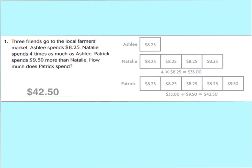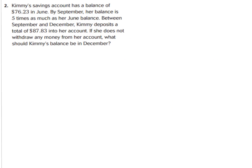Let's look at question two. It says Kimmy's savings account has a balance of $76.23 in June. By September, her balance is five times as much as her June balance. Between September and December, Kimmy deposits a total of $87.83 into her account. Remember, withdraw means to take away. What should Kimmy's balance be in December?